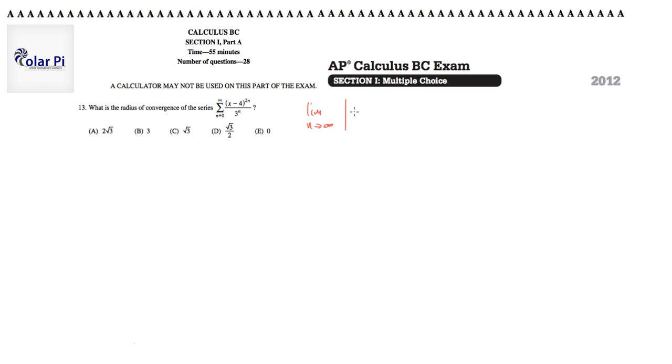which is the limit as n goes to infinity of a sub n plus 1 divided by a sub n, an absolute value being less than 1. So if you solve that inequality, then you can find the radius of convergence.